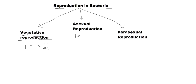But in asexual reproduction, in all types of asexual reproduction, one parent gives rise to only one offspring. So how can we call this reproduction? It doesn't multiply. And in the case of parasexual reproduction, that is also the same — it is not actually reproduction, it is actually gene transfer.